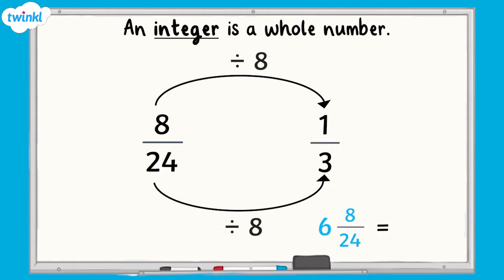The next step is to divide the numerator and the denominator by 8. 8 divided by 8 equals 1 and 24 divided by 8 is 3. Remember, we leave the integer alone. So, 6 and 8 twenty-fourths, in its simplest form, would be 6 and one-third.